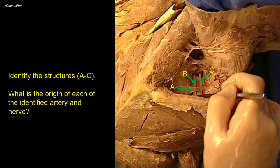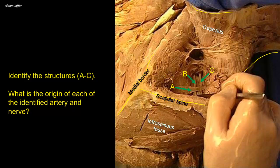Identify the structures A to C and the origin of each identified artery and nerve. This is a view from the back of the scapula. Here is the medial border of the scapula and the scapular spine, dividing the posterior surface into supraspinous and infraspinous fossa. The trapezius muscle has been dissected and reflected up, exposing the supraspinatus muscle in the supraspinous fossa. The two halves of supraspinatus are separated, showing the upper border of the scapula — the region of the suprascapular notch.